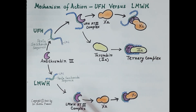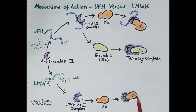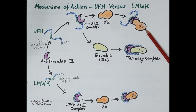Low molecular weight heparin primarily inhibits clotting factor 10a and is unable to inhibit thrombin. Because low molecular weight heparin molecules possess short polysaccharide chains, they are too small to form the ternary complex with thrombin. Therefore, low molecular weight heparin primarily inhibits factor 10a, whereas unfractionated heparin inhibits both factor 10a and thrombin.